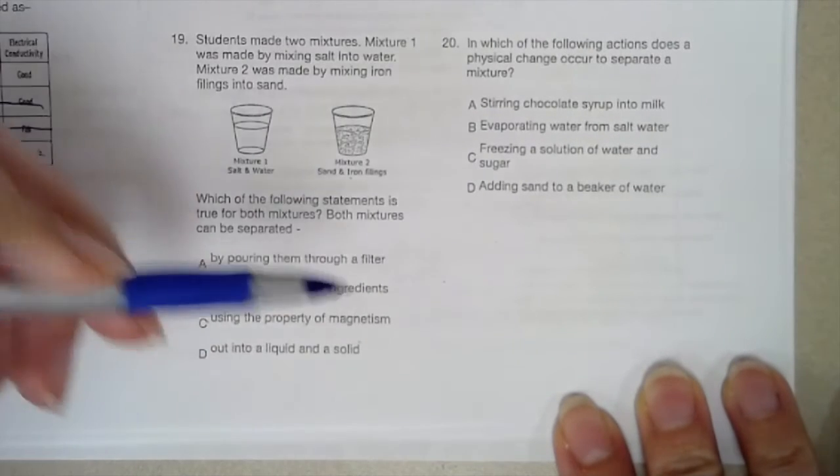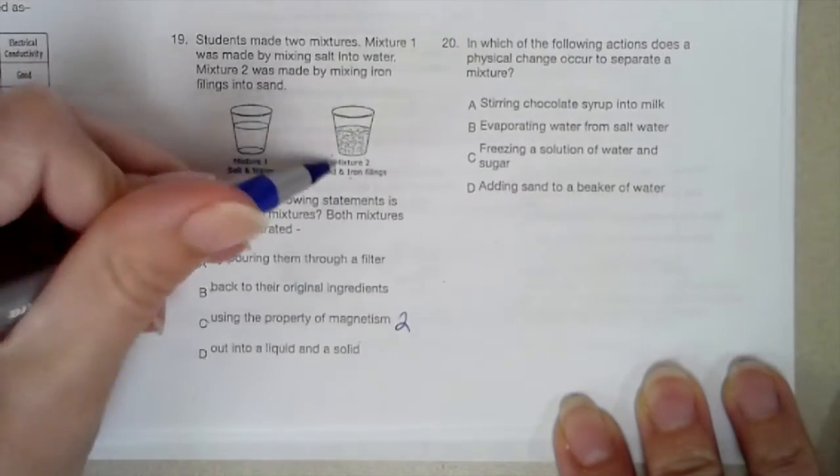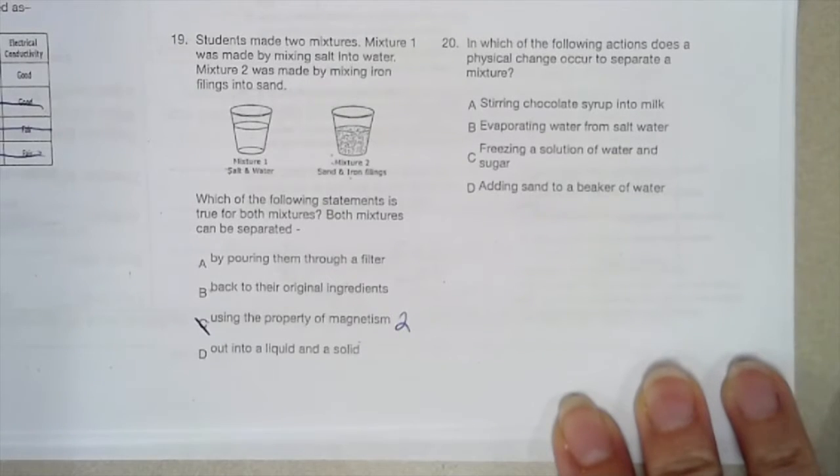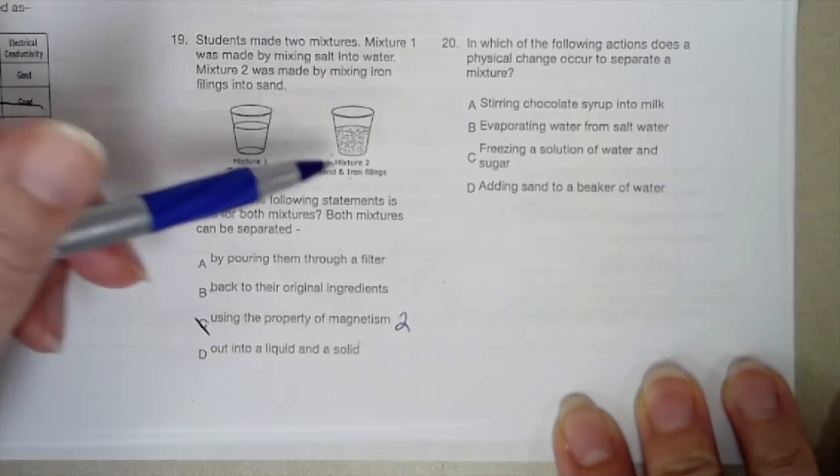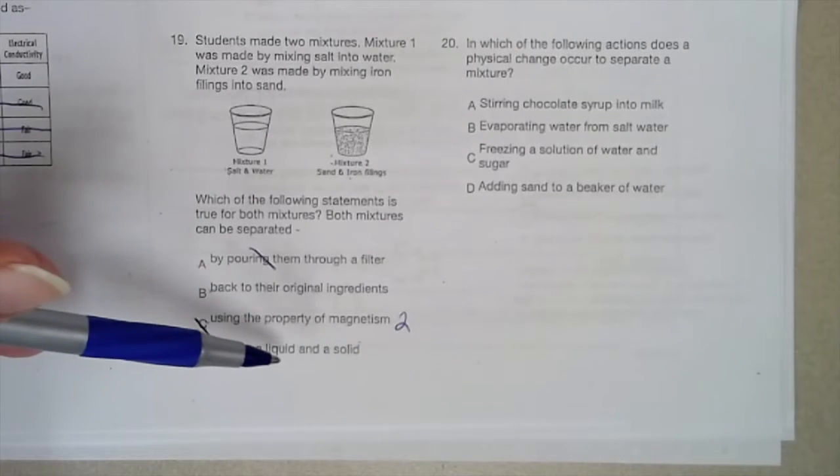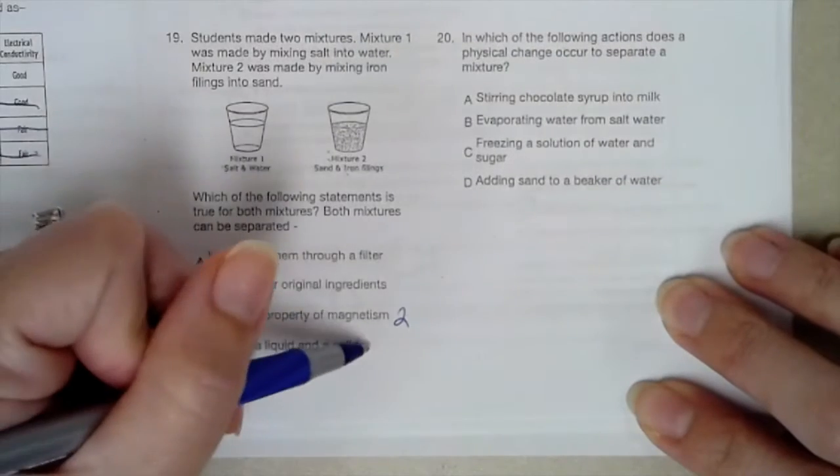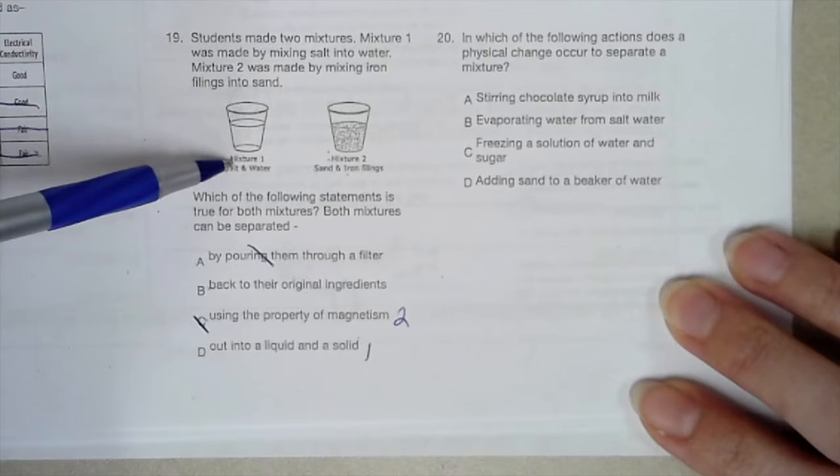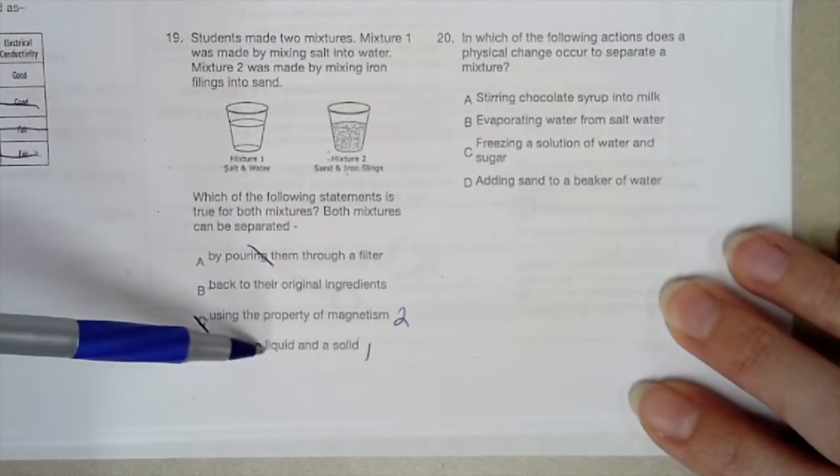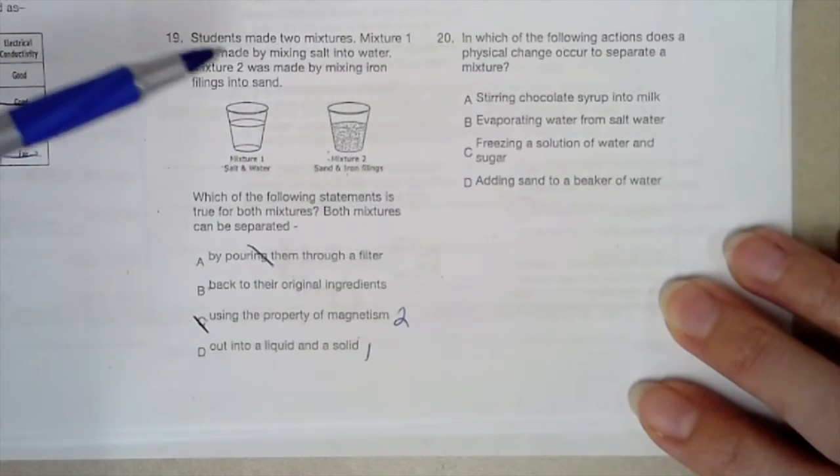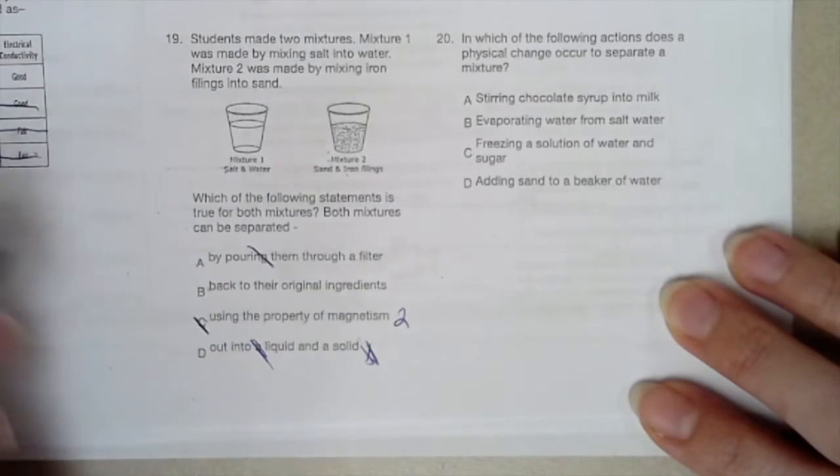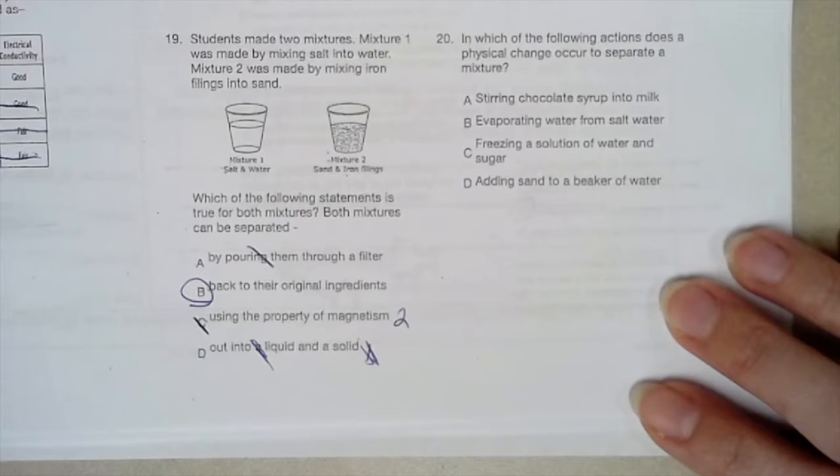Magnetism is only going to work for mixture 2 because it's got the iron filings in there. It's not going to work for mixture 1. Pouring them through a filter, that's not going to help for either one of them. Both can be separated out into a liquid and a solid. Actually, no, you wouldn't because the water would turn into a gas, it would turn into a water vapor. Sand and iron filings, those are two solids, so you can't do that with either one of them. But you can take both of them and separate them back to their original ingredients.